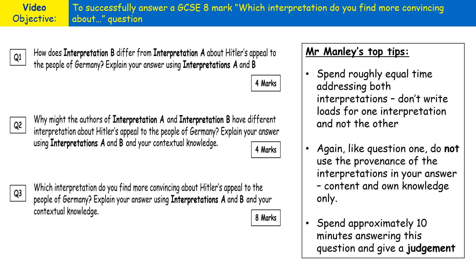Like question one, you don't use the provenance of the interpretations in your answer. You only need to focus on the content of both interpretations and your own contextual knowledge. Because this question is worth eight marks, you want to spend approximately 10 minutes answering it, and you must make sure you give a judgment on which interpretation you find more convincing.